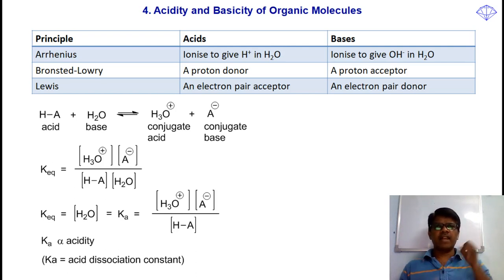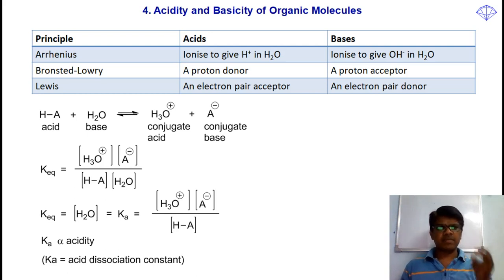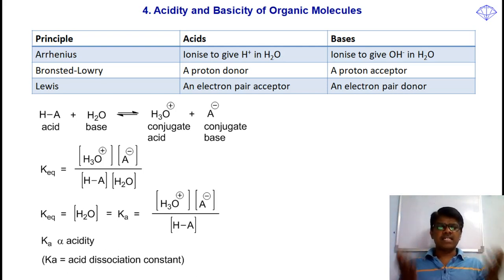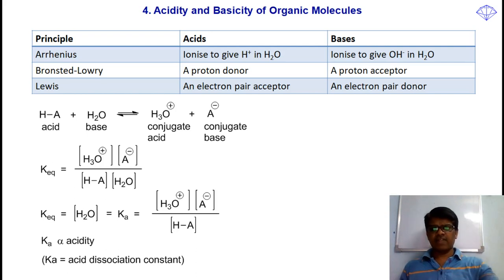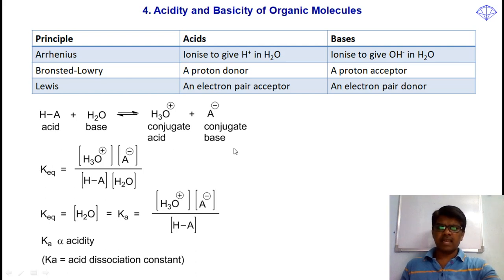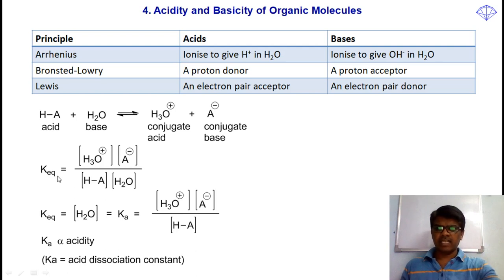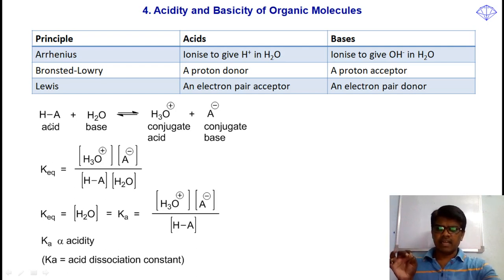But how to know the strength of an acid? If a compound is known to be acidic, what is the strength of that acid? If there are two compounds which are both acids, how do we measure and differentiate their acidity? There is an equation to know the strength of an acid. For example, if an acid ionizes in water to give rise to a conjugate acid H3O-plus and a conjugate base A-minus, an equilibrium constant K can be taken, and a simple mathematical equation shows products divided by reactants.